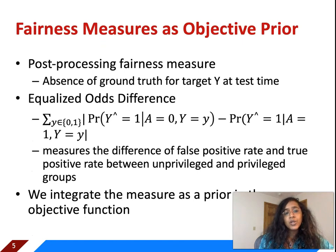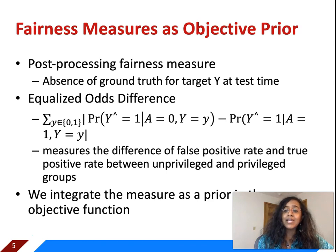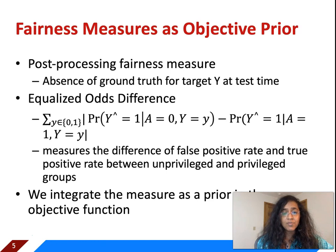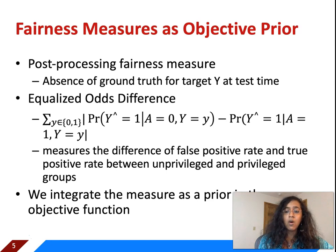To encode fairness measures as objective priors, we consider post-processing fairness measures. Post-processing fairness measures don't have ground truth for target y at test time, making them harder to encode, but we can still do so by encoding them as priors in our objective function. For example, the equalized odds difference measures the difference of false positive rate and true positive rate between unprivileged and privileged groups, and we integrate this measure as a prior in the objective function.